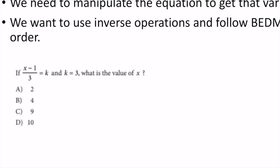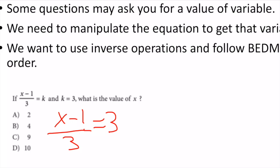The first step is to plug in everything that we know. I don't know x yet — that's what I'm trying to find. So I rewrite (x - 1) / 3. I do know k = 3. Right now there are imaginary brackets because the whole part x - 1 is divided by 3.